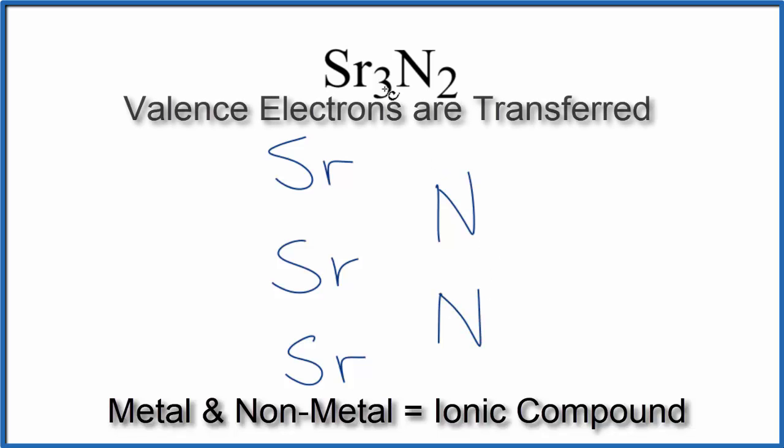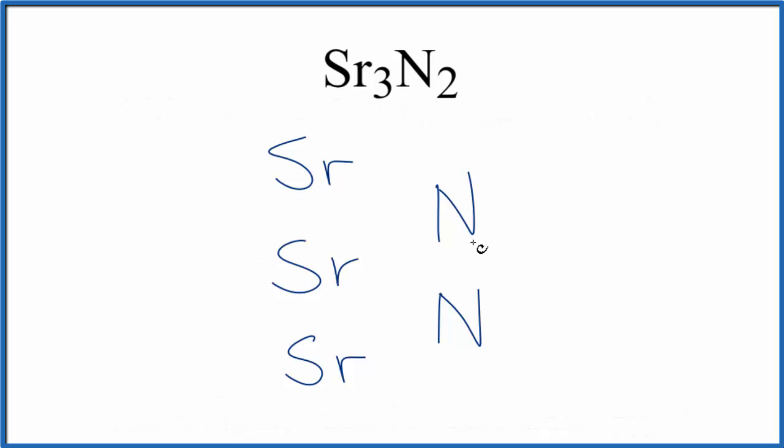Since strontium is a metal and nitrogen is a non-metal, we'll treat this as an ionic compound. And the metals will transfer electrons to the non-metals. Strontium is in group 2, so each strontium will have two valence electrons. Nitrogen's in group 15, sometimes called 5A. Each nitrogen has five valence electrons.